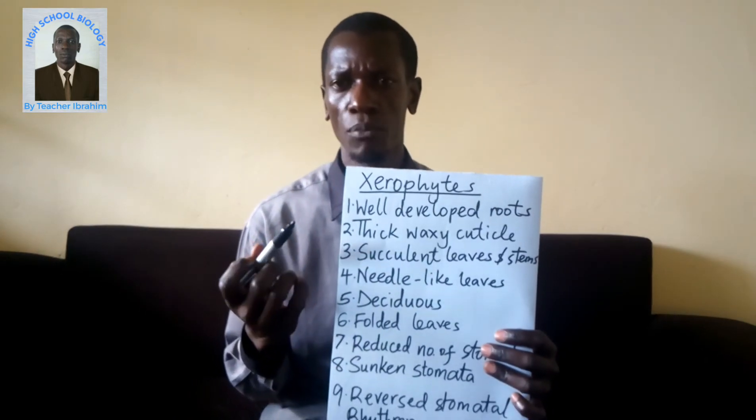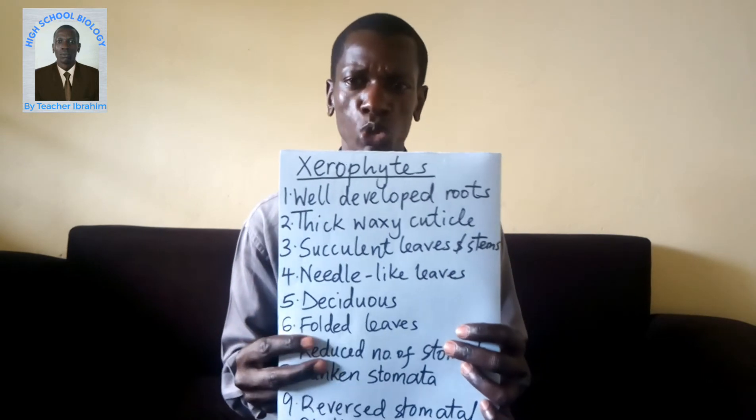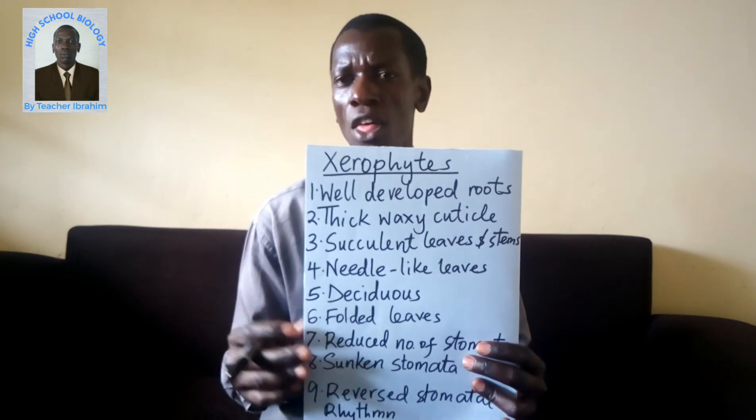Adaptation number one: they have well-developed, deeply penetrating roots to enable them to absorb water deep in the soil. These deeply penetrating roots also enable them to absorb water from deep in the water table. Adaptation number two: they have a thick wax cuticle to reduce the rate of transpiration.